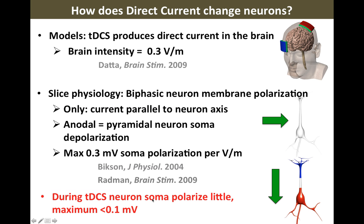This isn't very much, and it's certainly not enough to make a cell fire. If a cell is at minus 80 millivolts, to reach action potential threshold it needs to get to minus 60 — that's a 20 millivolt polarization, which is what deep brain stimulation or TMS produces, but not tDCS. tDCS will only produce about 0.1 millivolt of polarization and does not produce firing. But even a very small amount of polarization can change ongoing firing — it can change the ongoing activity of the cell.